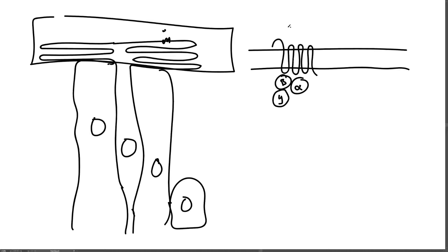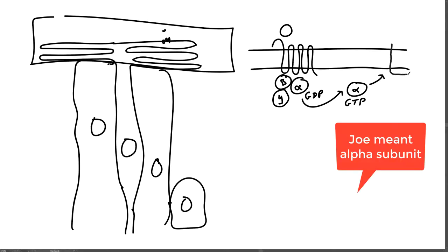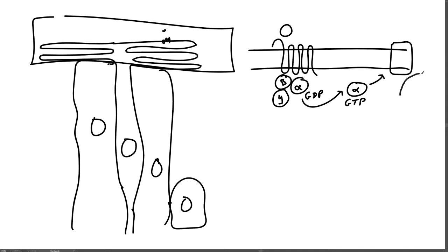When the odorant ligand binds to the receptor, the alpha subunit — which is associated with GDP — gets released and replaces the GDP with GTP. The beta subunit then associates with adenylate cyclase, which converts ATP into cyclic AMP. Cyclic AMP binds to a cyclic AMP-gated ion channel, allowing ions to flow in, depolarizing the neuron and causing an action potential that carries an electrical signal to the brain for that odor.